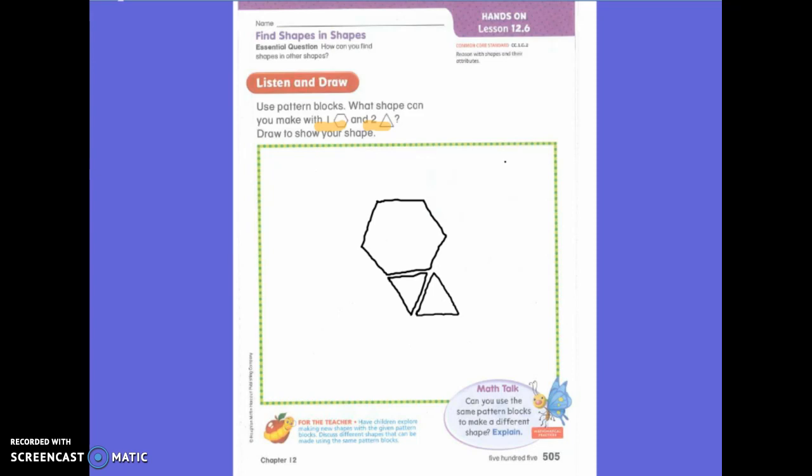Some do the same thing as the other people. Does everyone's shape have the same number of vertices and sides? Yes.